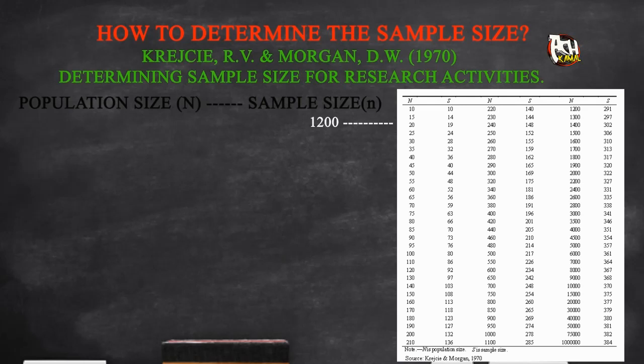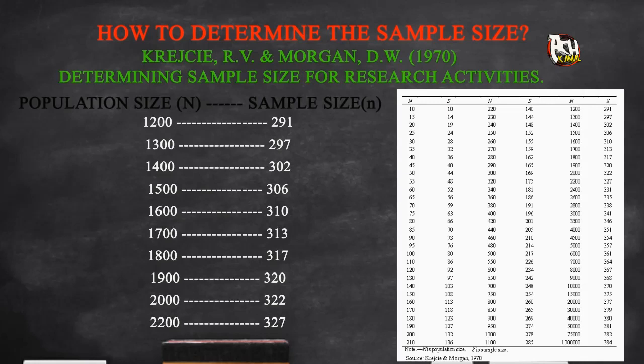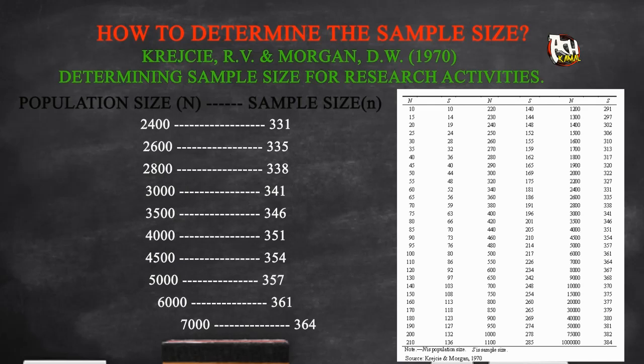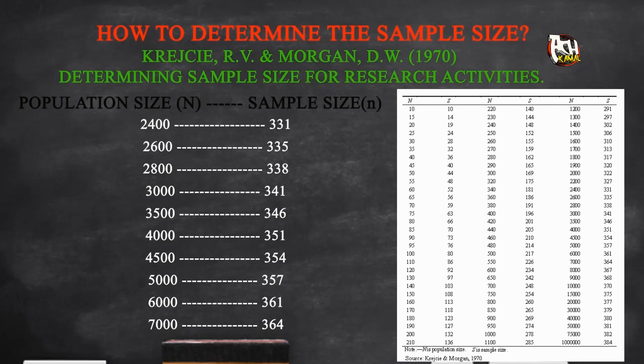They came up with this table to help researchers determine their sampling size. In the Krejcie and Morgan table, we see that there are two columns: column N, which represents the population size, and the second column S or small n, which represents the sample size.